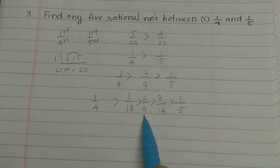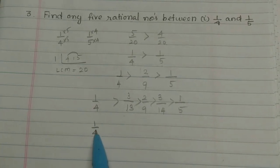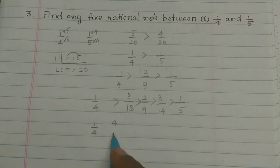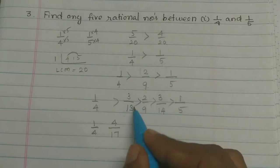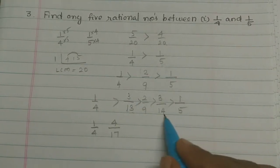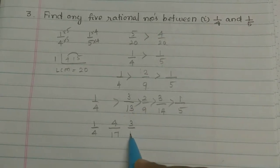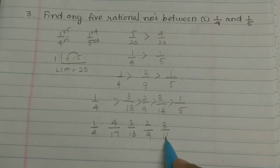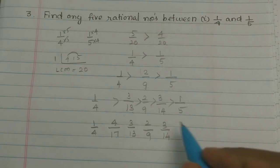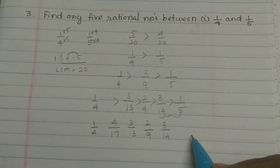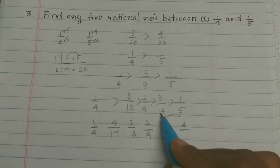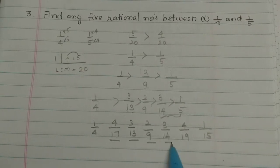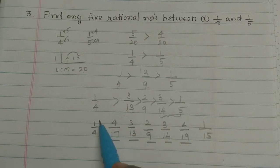Now we have 3 numbers and we need 2 more. So 3 by 13: 3 plus 1 equals 4, and 4 plus 13 equals 17. Then between 3 by 13 and 2 by 9, we get 4 by 17. For the other side, 3 by 14: 3 plus 1 equals 4, and 14 plus 5 equals 19. So the 5 rational numbers between 1 by 4 and 1 by 5 are found.